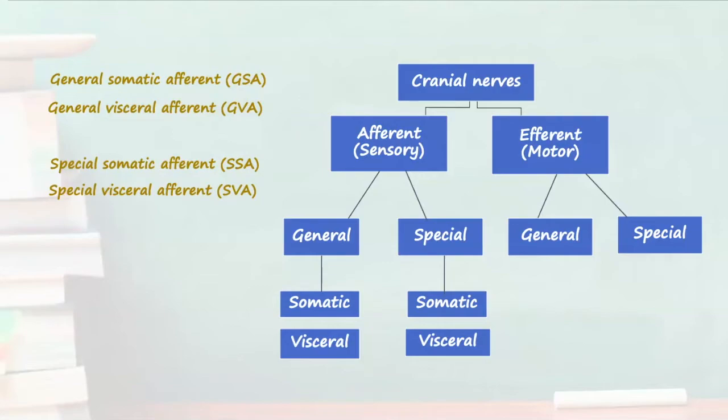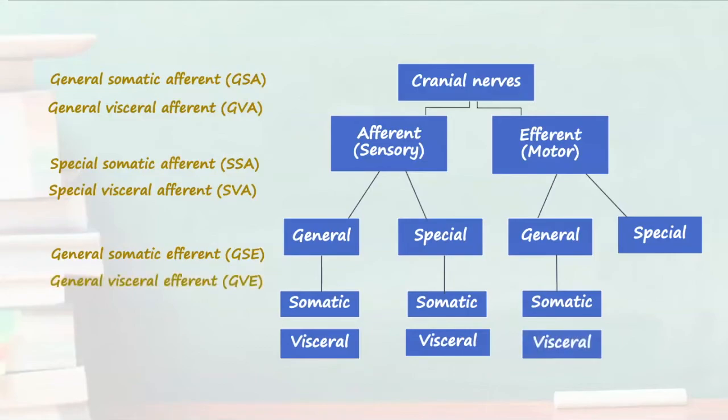This classification gives rise to general somatic efferents which supply skeletal muscle, extraocular muscles of the eye and even muscles of the tongue. General visceral efferents supply internal and visceral organs such as smooth muscle of the gut to allow peristalsis.